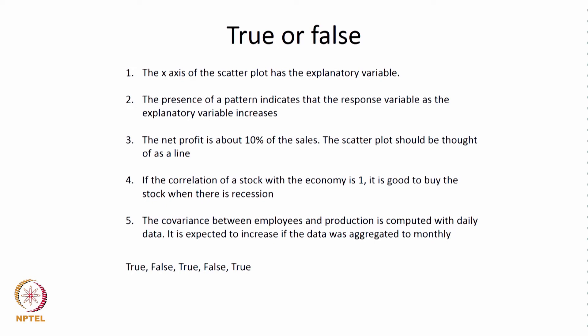Let us move on to some true or false questions. The x-axis of the scatter plot has the explanatory variable — the answer is true. The x-axis is the independent variable or the variable that tries to explain something happening, and the y-axis has the variable on which the effect of the explanatory variable is felt. Therefore, x-axis has the explanatory variable is true.